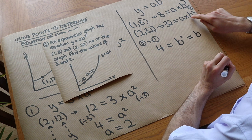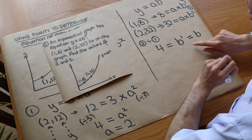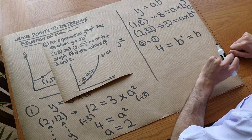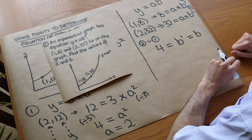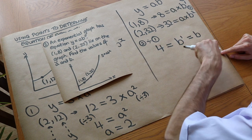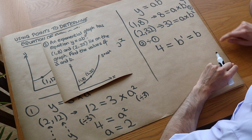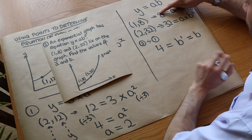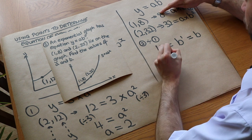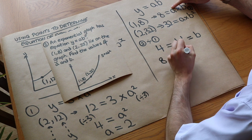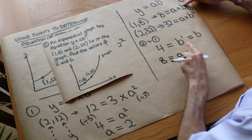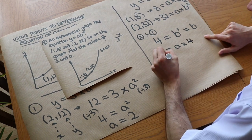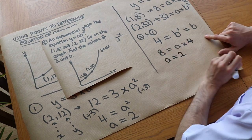Now that we've found b equals 4, we substitute this back into one of the equations to find a. Substituting into equation 1: 8 equals a times b to the 1, which is 4. So 8 equals 4a, and therefore a equals 2.